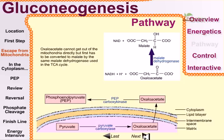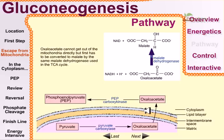Oxaloacetate cannot get out of the mitochondria directly. It first has to be converted to malate by malate dehydrogenase, which is also used in the TCA cycle. This is a very important step because inside the mitochondrial membrane there is no transporter for carrying oxaloacetate, so oxaloacetate must be converted into another intermediate that can be transported to the cytosol — and that intermediate is malate.